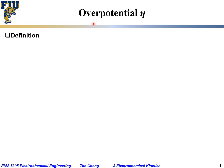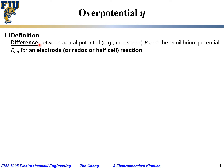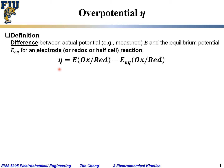Let's look at overpotential, or eta, in greater detail. Overpotential is the difference between the actual potential for an electrode reaction — or for a redox or half-cell reaction — and the equilibrium potential, E_eq, for the same electrode or redox or half-cell reaction. So overpotential would be the difference between actual and equilibrium for the same redox or half-cell reaction.